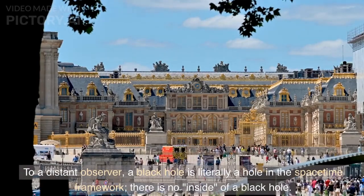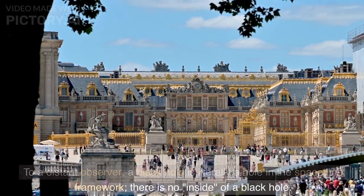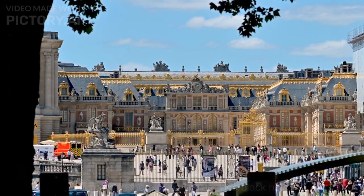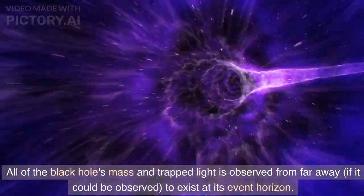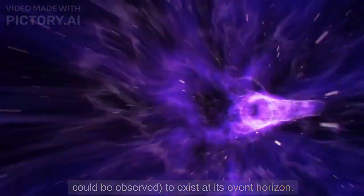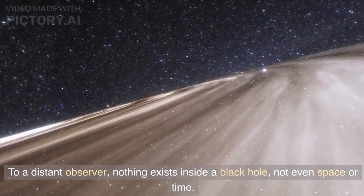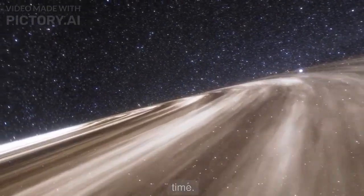To a distant observer, a black hole is literally a hole in the spacetime framework. There is no inside of a black hole. All of the black hole's mass and trapped light is observed from far away, if it could be observed, to exist at its event horizon. To a distant observer, nothing exists inside a black hole, not even space or time.